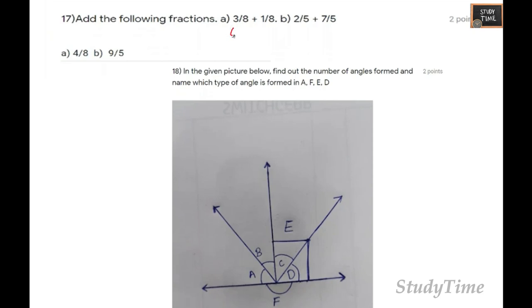Add the following fractions. The answer is 4 by 8 here. For this one, 2 plus 7, the answer is 9 by 5.